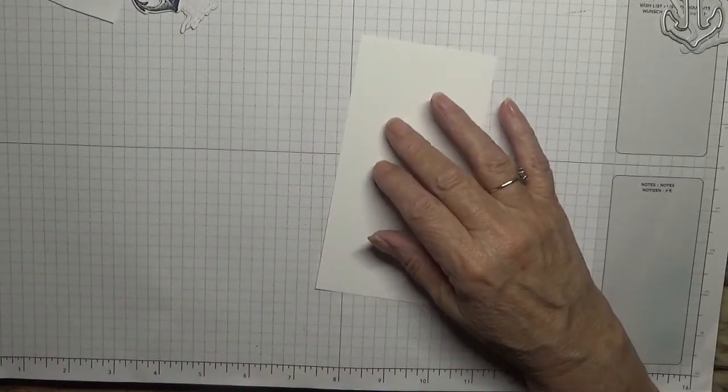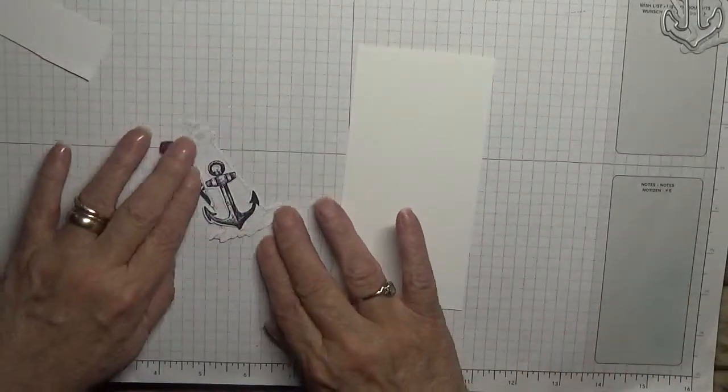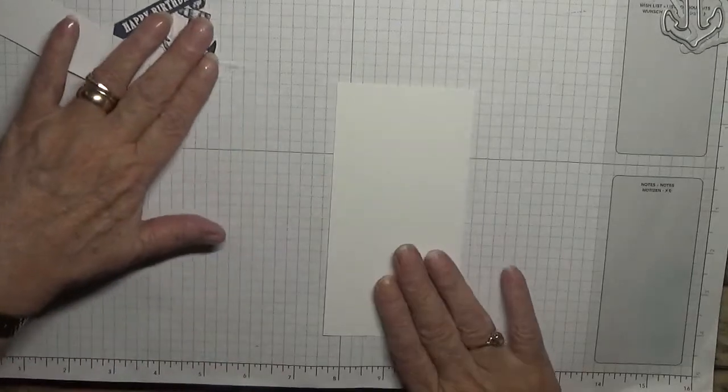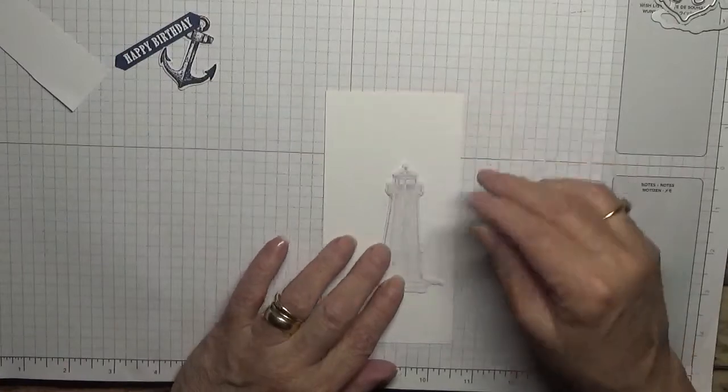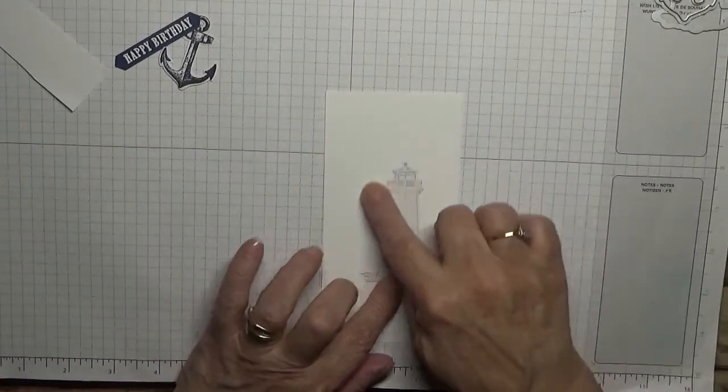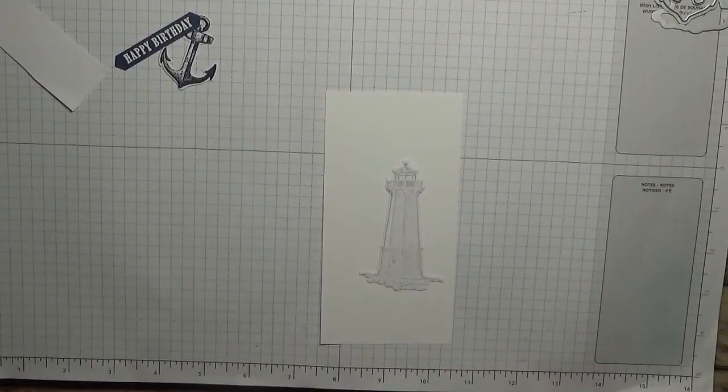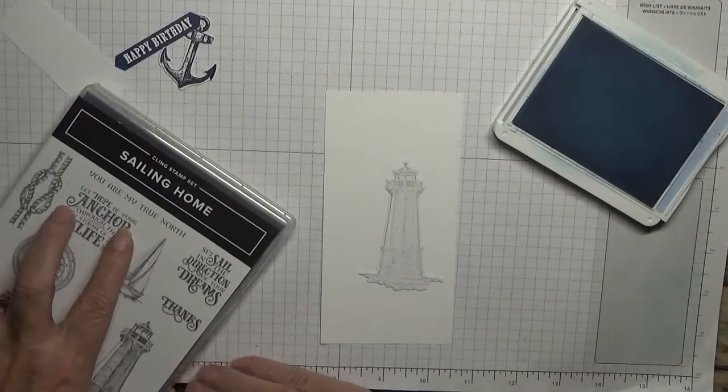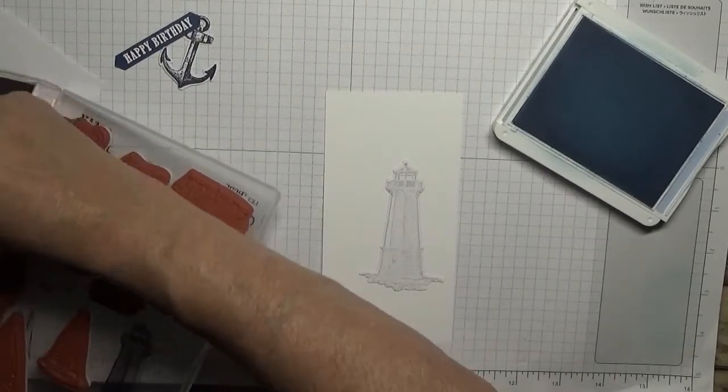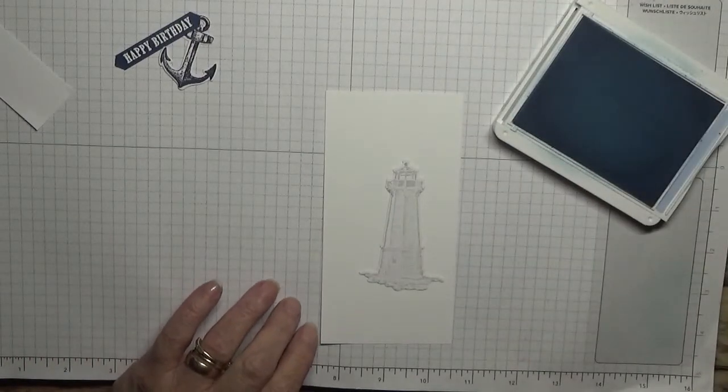I've got my lighthouse, my anchor, and my happy birthday. I just need to prepare this one. It's going to go there. I want a blue surround, so Seaside Spray surround.